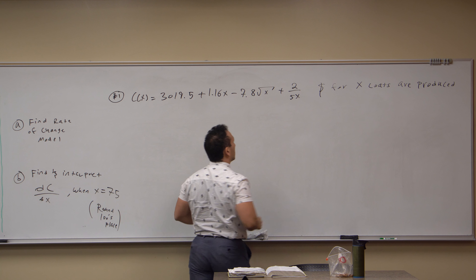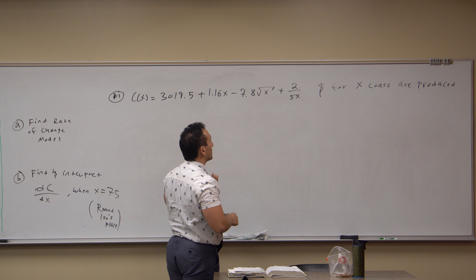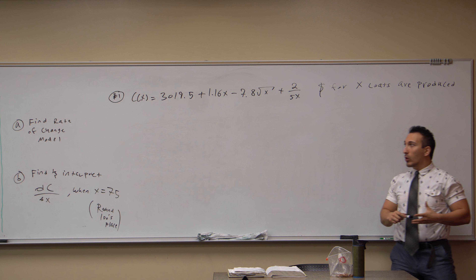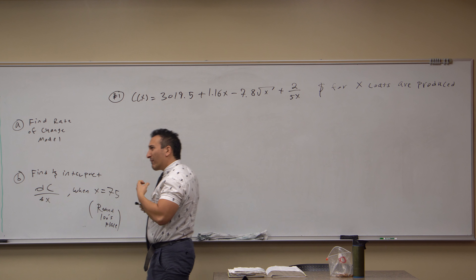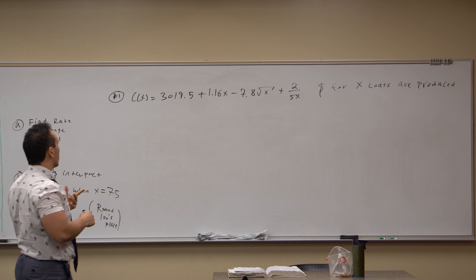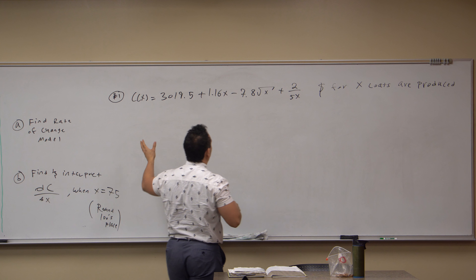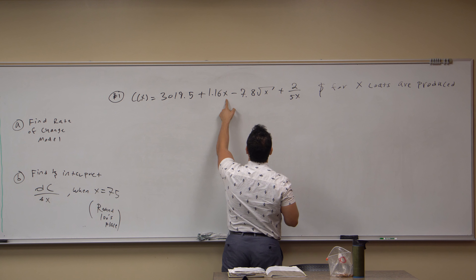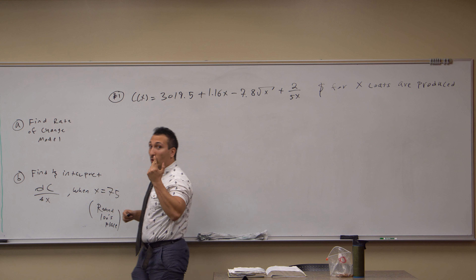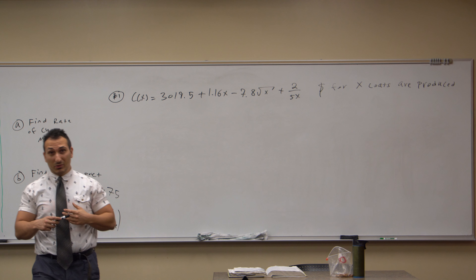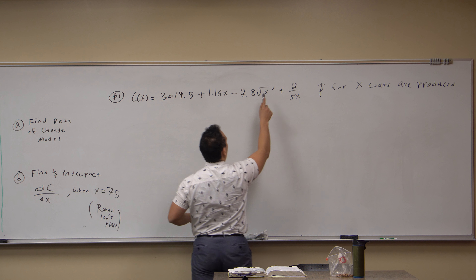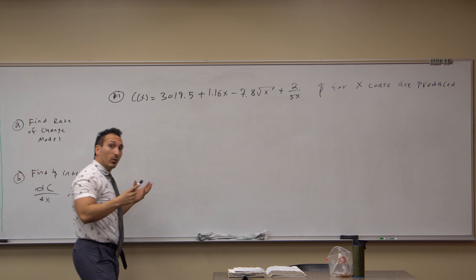The output of C(X) is the amount of dollars it costs to produce X coats. So if I produce one coat, I replace X with one in the function and that tells me the cost of making one coat. Similarly, if I want to know the cost of making 100 coats, I replace all the X's with 100. But that's not what we want to do here.